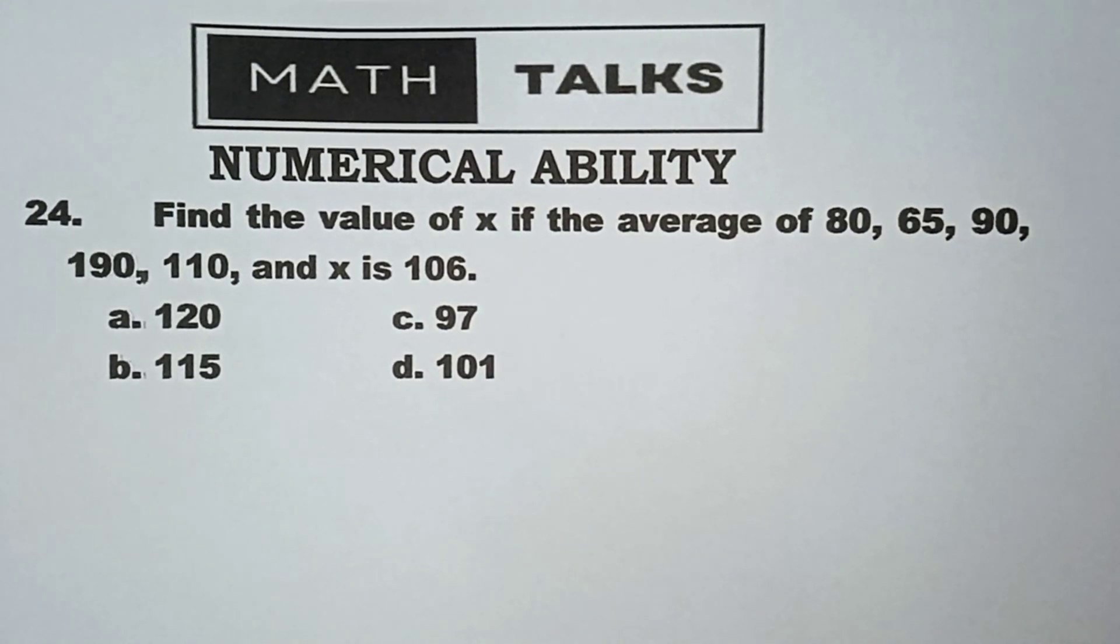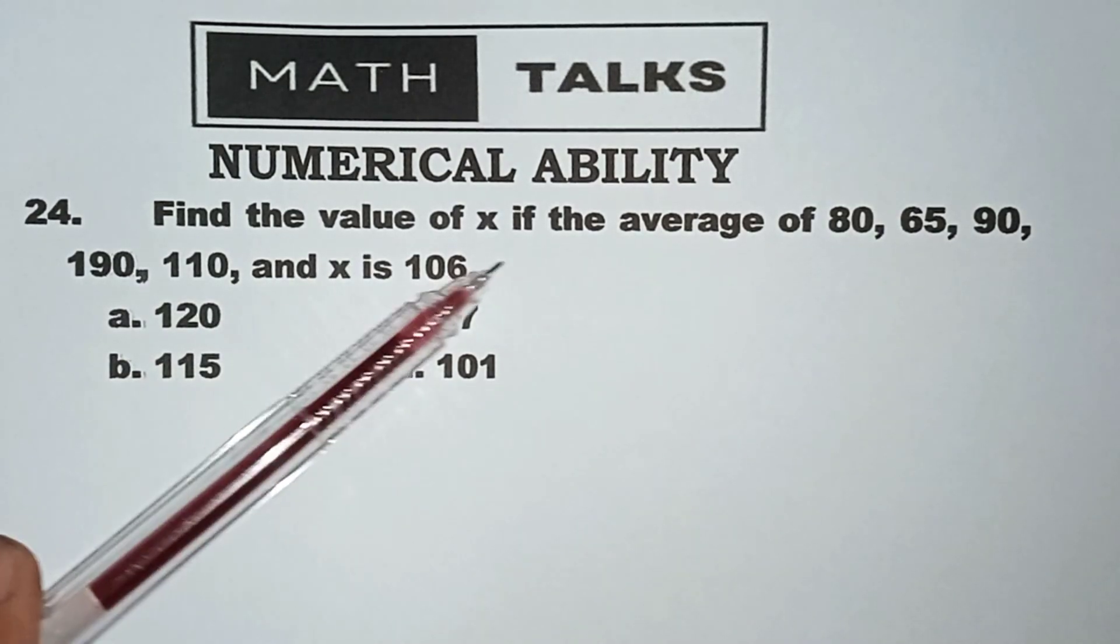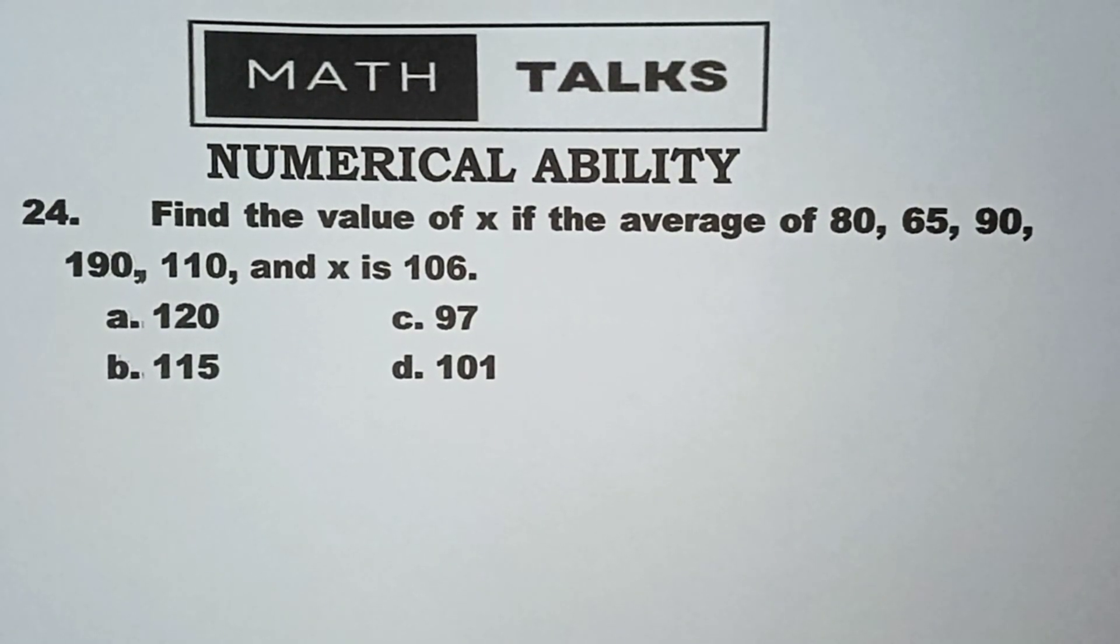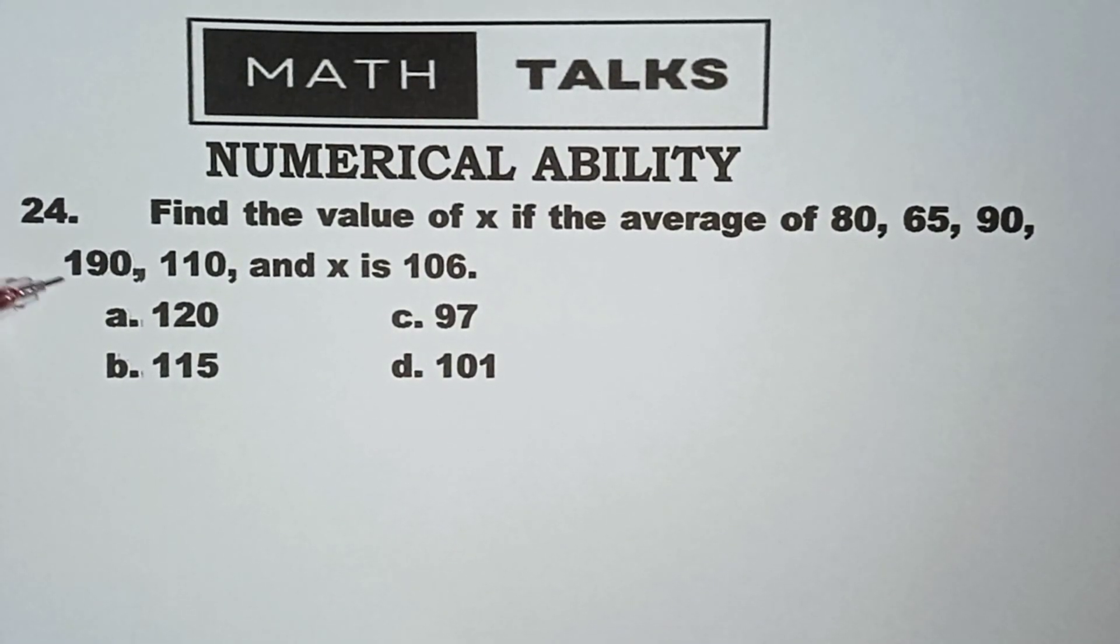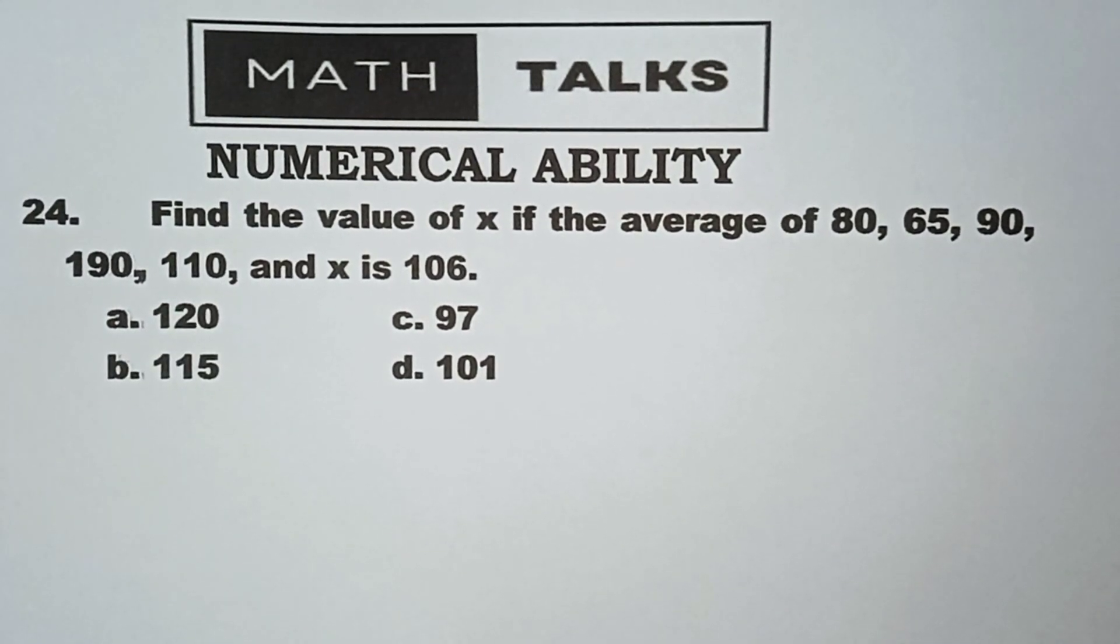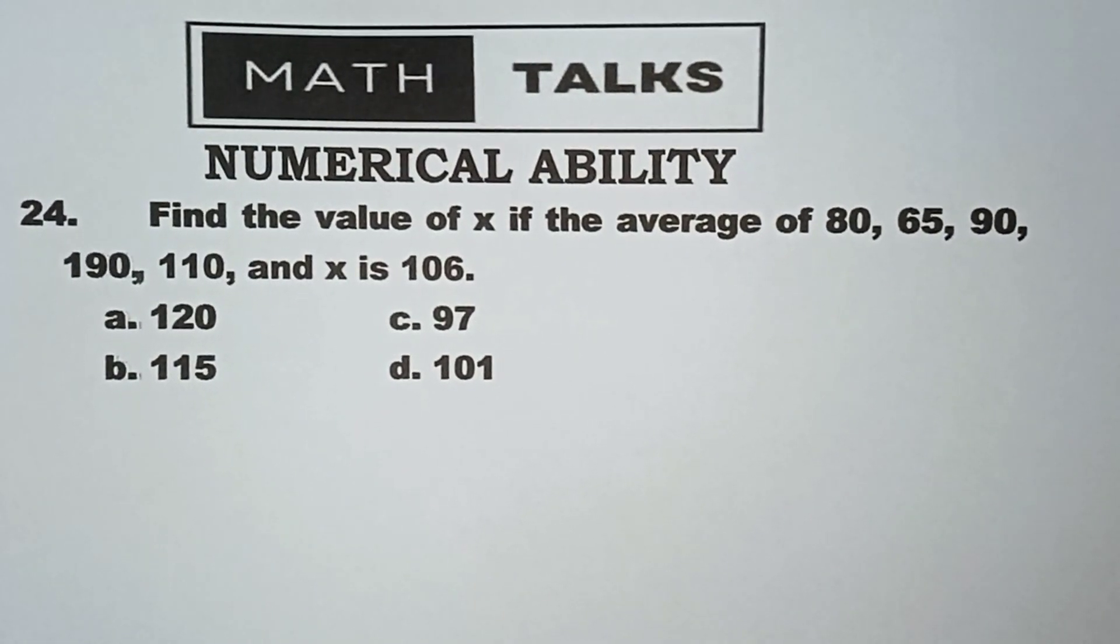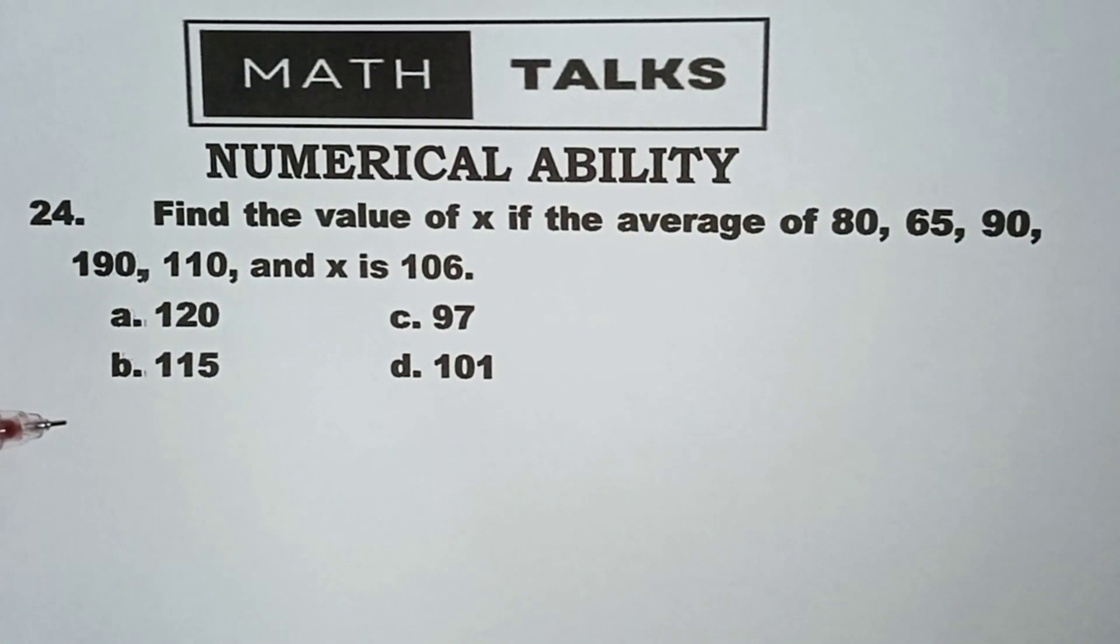Let us write to answer the numerical ability number 24. Find the value of x if the average of 80, 65, 90, 190, 110, and x is 106. The choices are: a) 120, b) 115, c) 97, d) 101. Okay, so we are talking about the average.